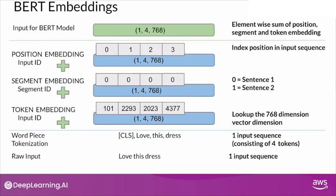With BERT you encode sequences. Here is an end-to-end example of converting a sequence into BERT embeddings that can be readily used by the BERT algorithm. I will build out the process of converting the raw review text from the product review dataset into BERT embeddings that can be used by the BERT algorithm.